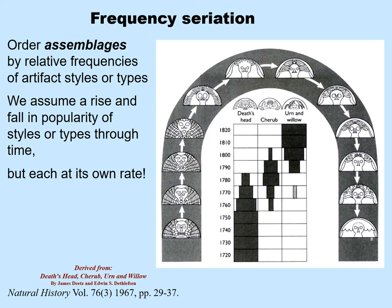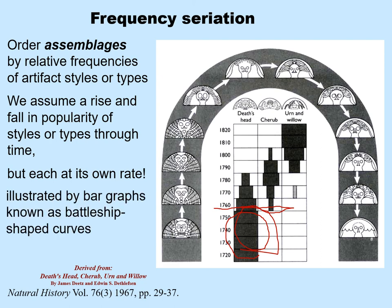For example, if you found only death's heads on all the gravestones in a New England cemetery, you would be in the time period of the 1720s through the 1750s. But if instead you find about 80–85% death's heads and 20% cherubs, you are in the 1760s. It's the relative frequencies — percentages — that you illustrate with bar graphs we call battleship-shaped curves. This particular illustration is itself in the shape of a gravestone.